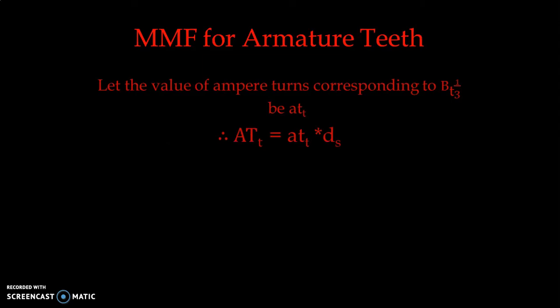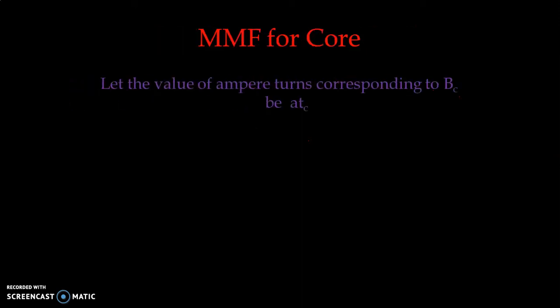The total MMF required for the armature teeth is: ATT = att × ds, where ds is the depth of the slot. The length of the teeth is equal to the depth of the slot, so this gives us the ampere-turns required for the teeth.